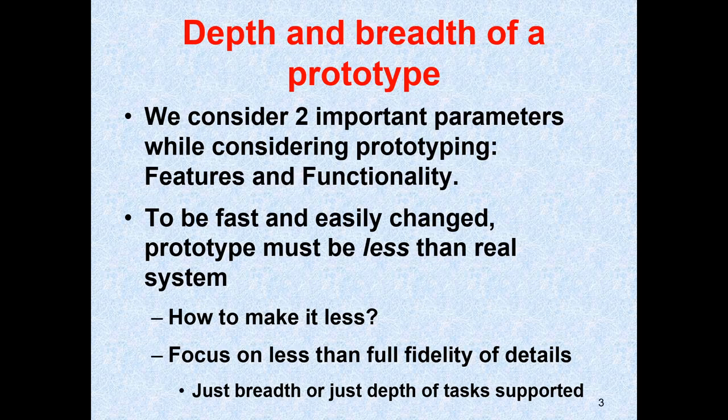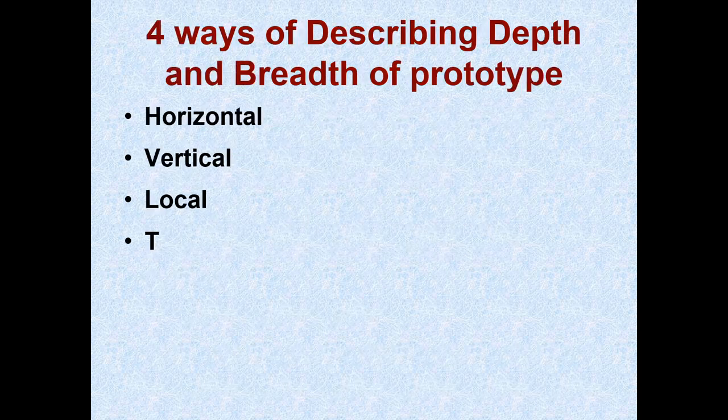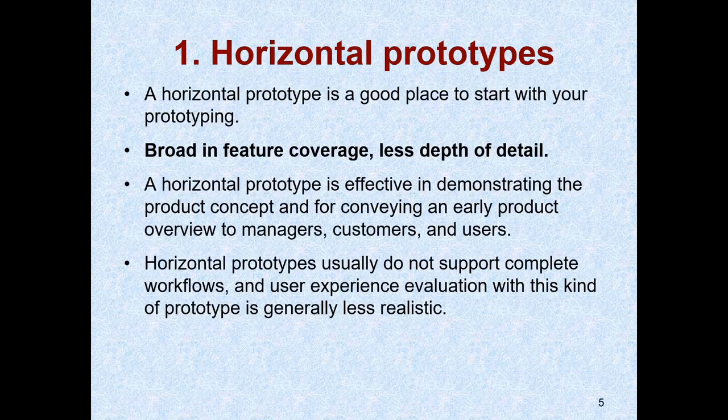When considering the depth and breadth of a prototype, there are two important parameters: first, how many features we have to add, and second, how much functionality to include. These two parameters help us design the system. Depending on that, there are four ways of describing the depth and breadth of a prototype: horizontal, vertical, local, and T.